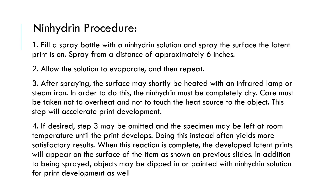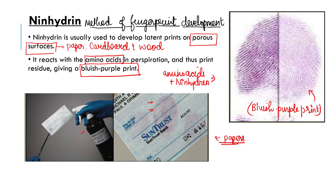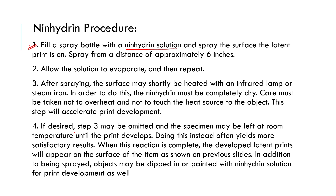What are the important steps and procedure to perform the ninhydrin method? The first step is to fill a spray bottle with a ninhydrin solution. Spray the surface that the latent print is on. For whatever suspected print you have, spray the ninhydrin solution from a distance of approximately six inches from your object.